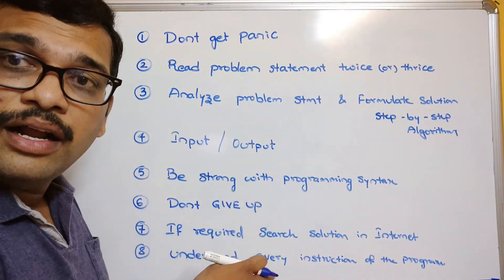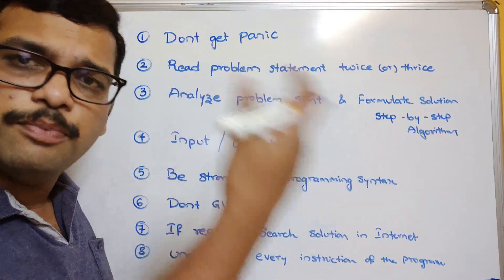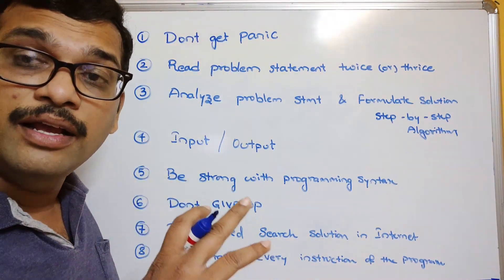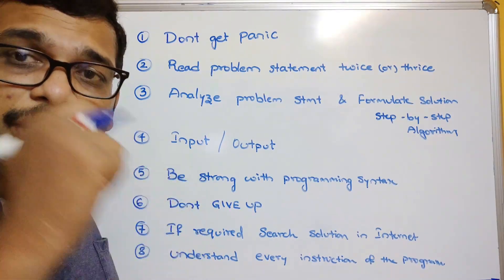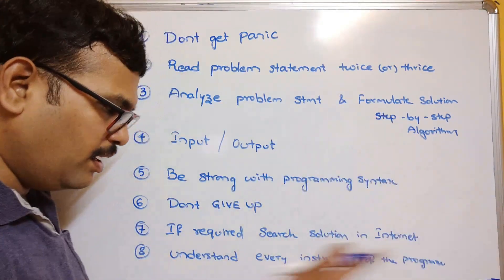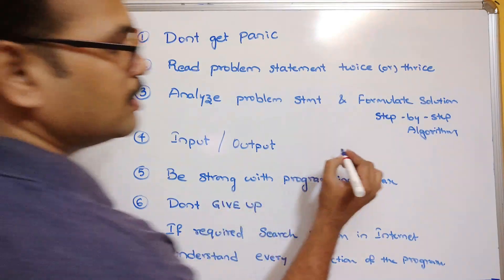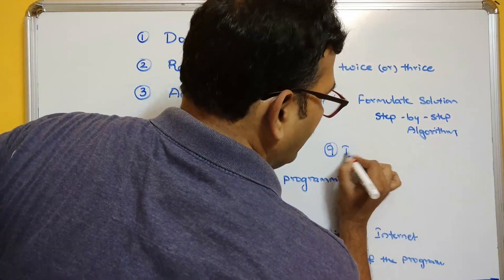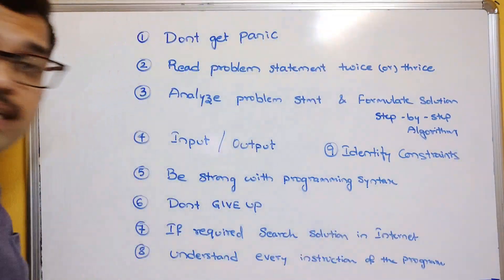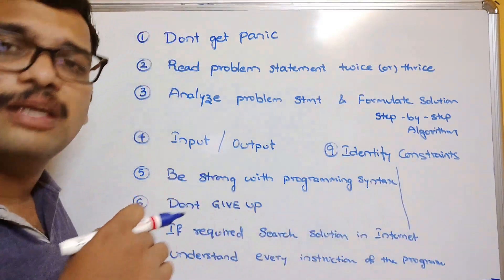If you get a program from the internet, analyze every instruction. After doing this for a few programs, definitely the next program can be implemented by your own. For example, if you search solutions for five programs, at least 20 to 30 percent of the instructions for the sixth program can be written by yourself. This is most important — understand every instruction. Also, identify the constraints: for every program there will be some constraints to consider.